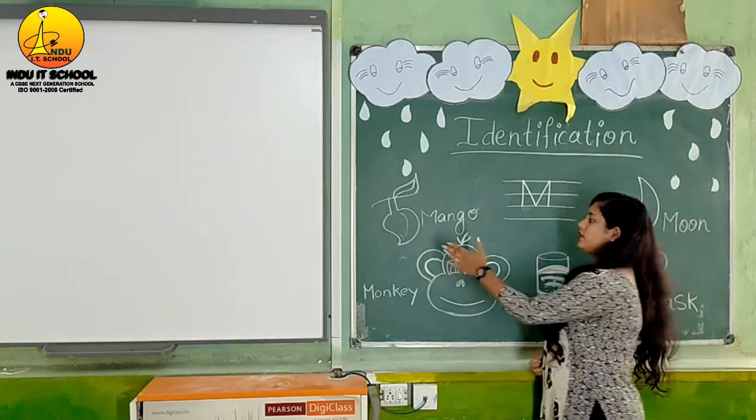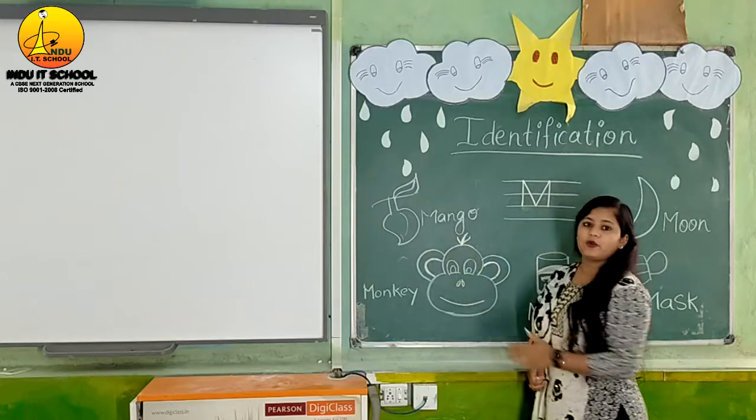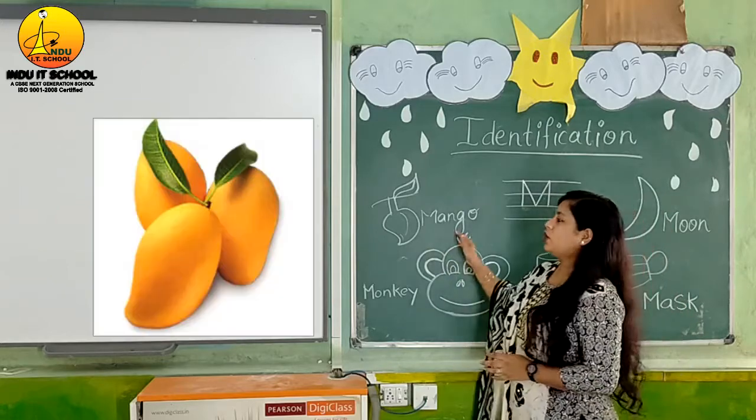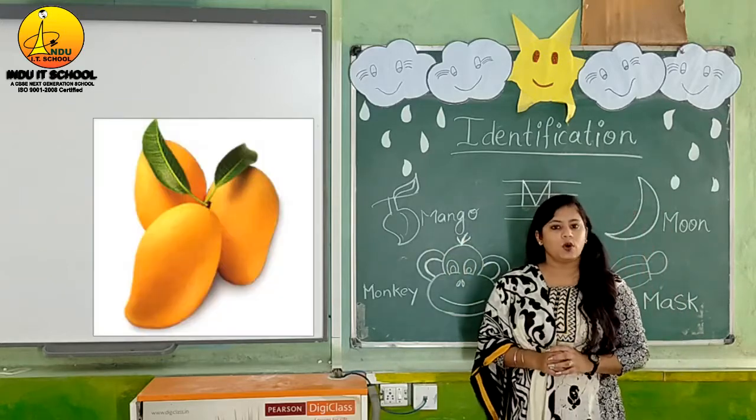Look here, our first object is M for mango. Mango is a fruit.